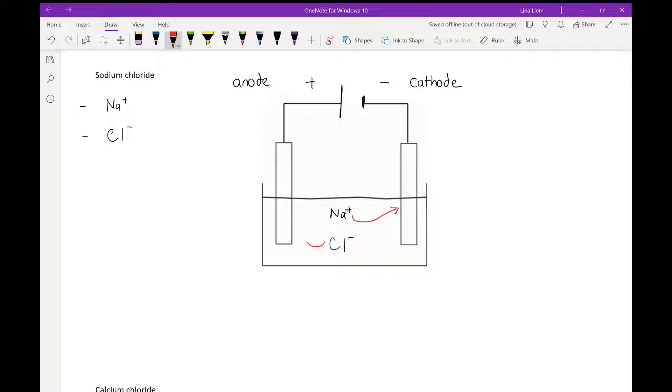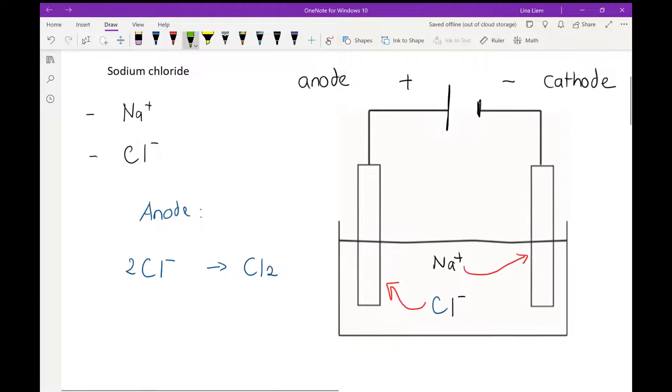The reaction happening on the anode therefore is chloride converted to chlorine. Chlorine is Cl2, that means it's composed of two atoms of chlorine, and on the left hand side therefore we need two ions of chloride to balance the reaction. Then we have to balance the charges. Remember that in balancing reaction equations the charges on the left must equal the charges on the right. On the left here we have a total of two minus charge and on the right here we have zero, and that's not balanced.